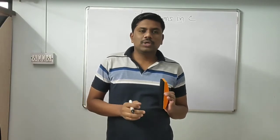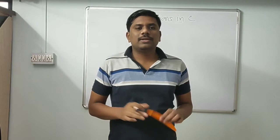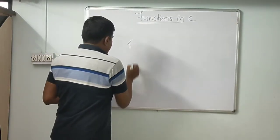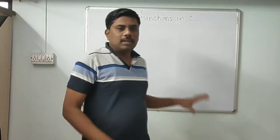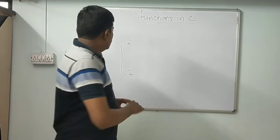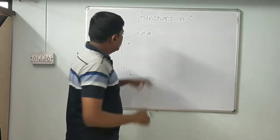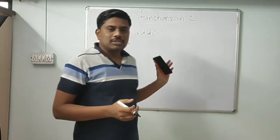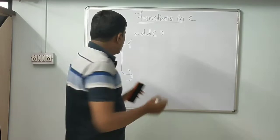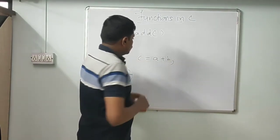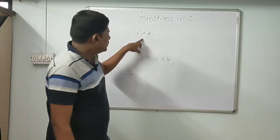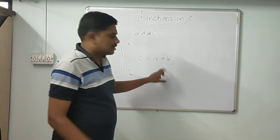Let us start with functions in C programming. First we'll see the definition of a function, then the advantages, then the drawbacks, and then the types of functions in C. So, a function is a block of code which performs a particular task. In C, a block is defined using curly braces — opening and closing. For example, consider an 'add' function — it is a block of code that performs addition of two numbers.